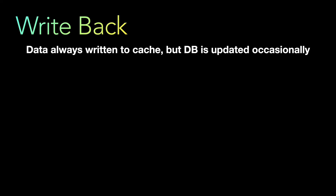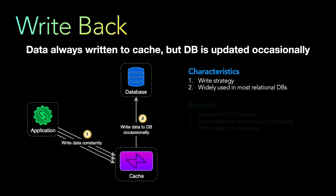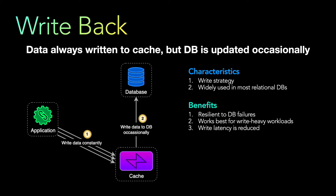The next pattern is the write-back strategy. Data is always written to the cache, but the database is updated only occasionally. This is similar to write-through — the application writes to cache and cache writes to database — but not on every write. You can batch the writes to the database. Characteristics: it is a write strategy and widely used in relational databases like InnoDB. Benefits: it is resilient to database failures since data is always written to the cache, so if the database is down the application can still serve data from the cache. It works for write-heavy workloads and write latency is reduced.